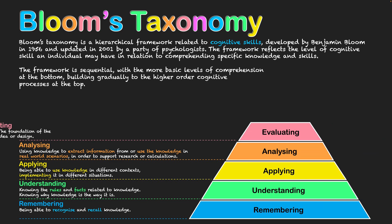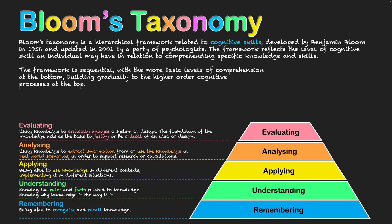The next level is that of evaluation. With evaluation, we're now being critical. I've built up a level of knowledge so I don't just know how to do these tasks, but I can be critical about how to go about doing them — using knowledge to critically analyze a system or design. The foundation of the knowledge acts as the basis to justify or be critical of an idea or design. This means evaluating my own work: what went well, what went badly, and what could be improved, as well as other people's work. We need quite a high level of knowledge here because we're not just thinking there's only one solution to a problem, but understanding there are many ways of completing it and being able to justify the best avenue with existing knowledge.